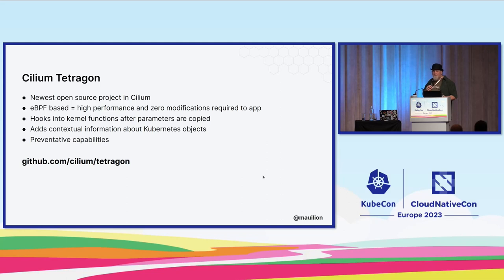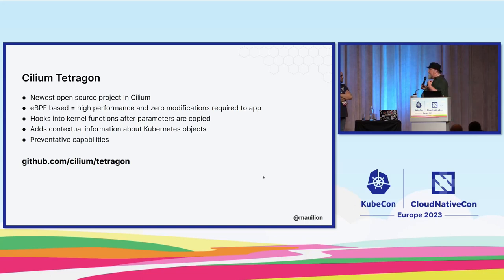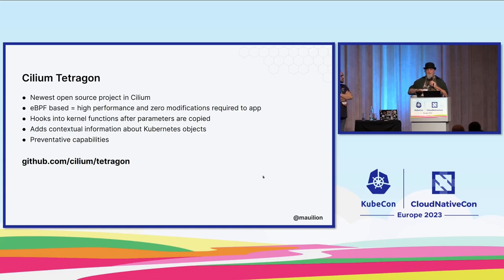Tetragon is the newest open source project in Cilium. It's eBPF-based, which means it's high performance and zero modifications are required to the application itself. It hooks into kernel functions after parameters are copied. One thing I haven't talked about is that emitting an event is just one of the actions available to you — you can also kill the process. If you saw somebody running a setuid call and wanted to make it impossible in any process in the entirety of the cluster, whether running inside a container or on the underlying host OS, you could implement a Tetragon tracing policy that would block the setuid system call across the board everywhere.